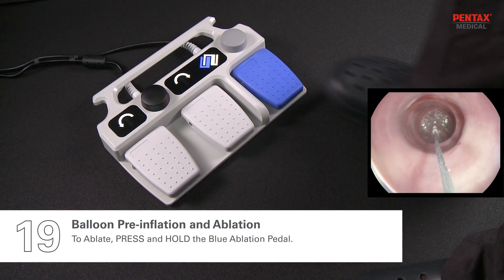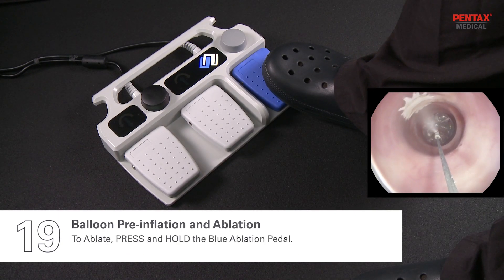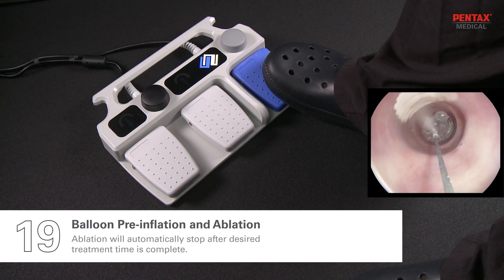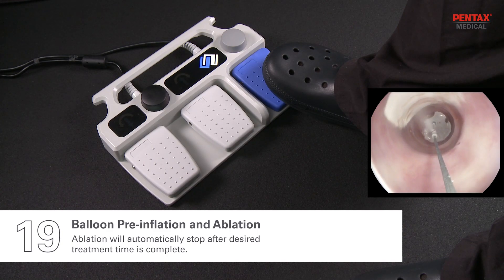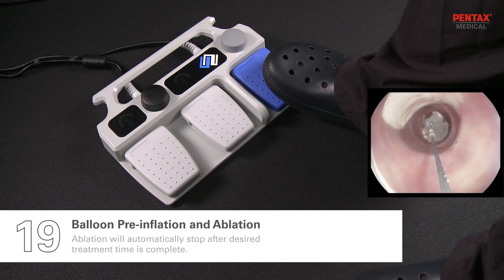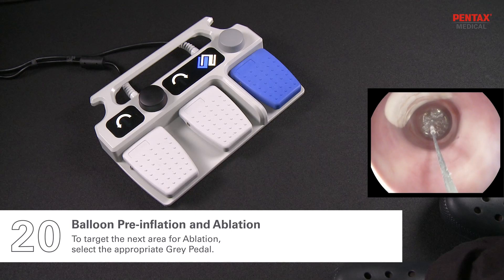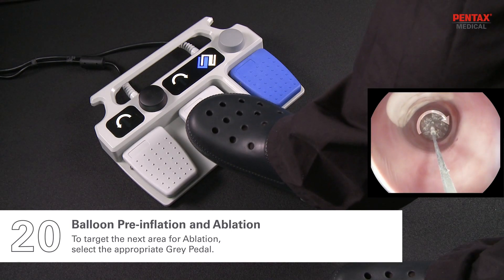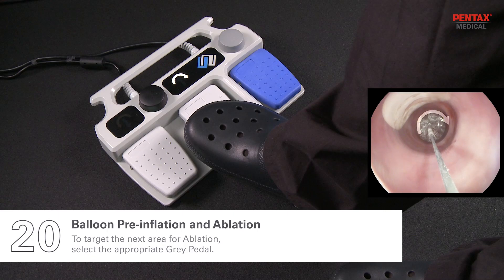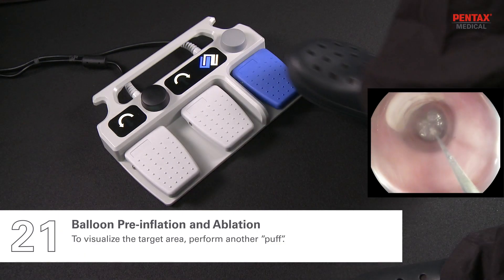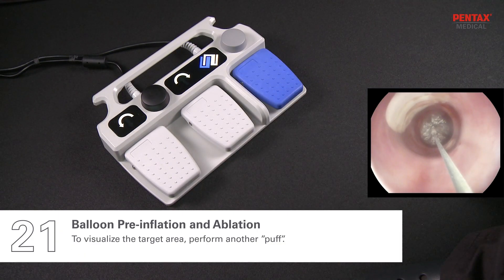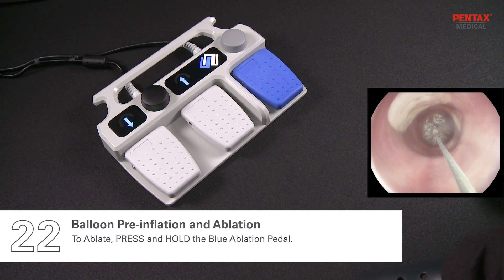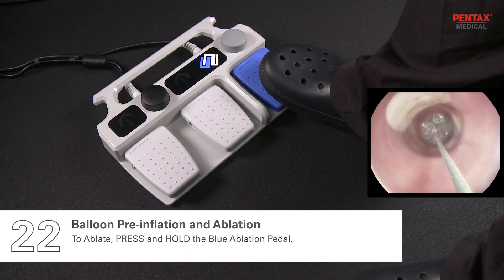To ablate, press and hold the blue ablation pedal. Ablation will automatically stop after the desired treatment time is complete. To target the next area for ablation, select the appropriate gray pedal. To visualize the target area, perform another puff. To ablate, press and hold the blue ablation pedal.